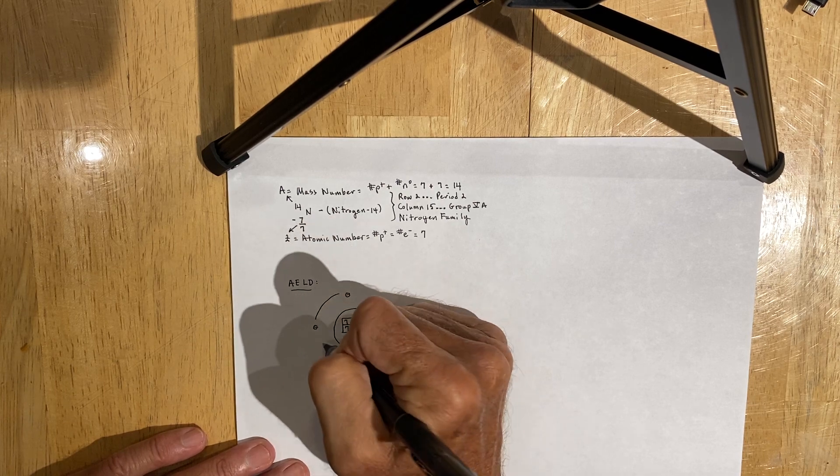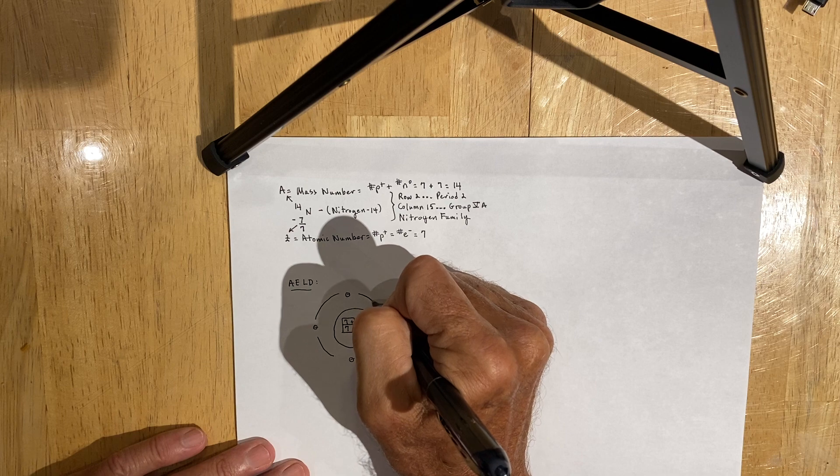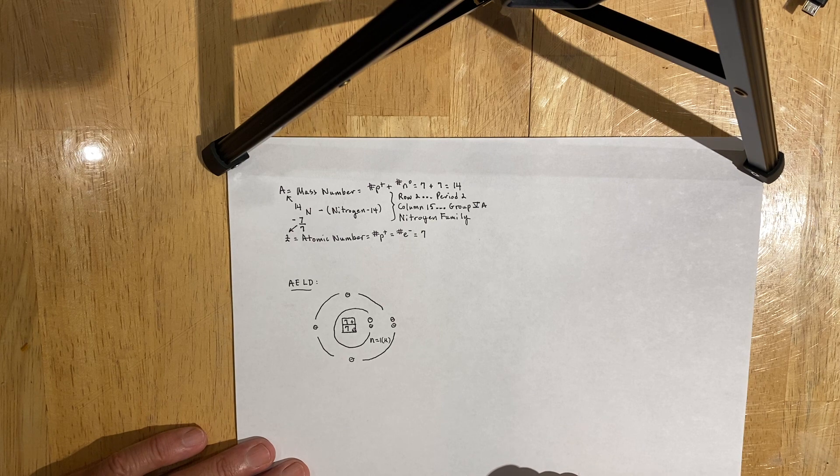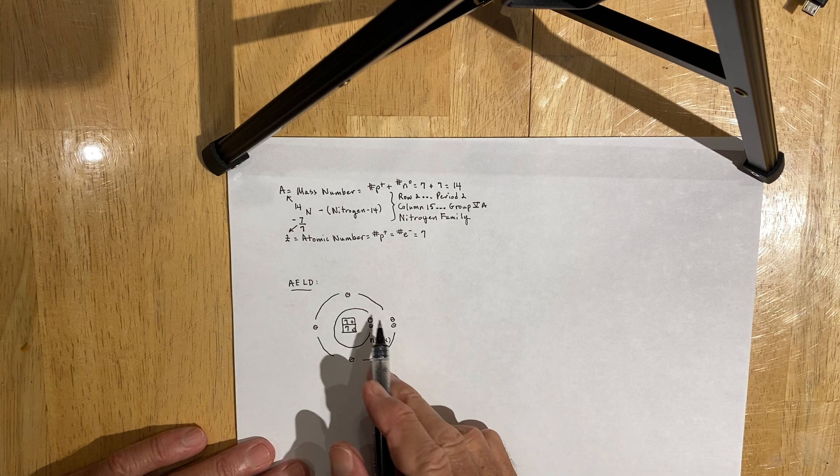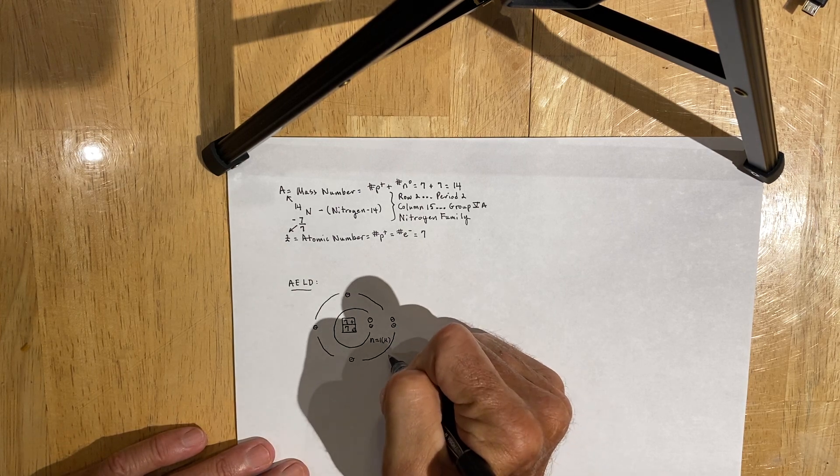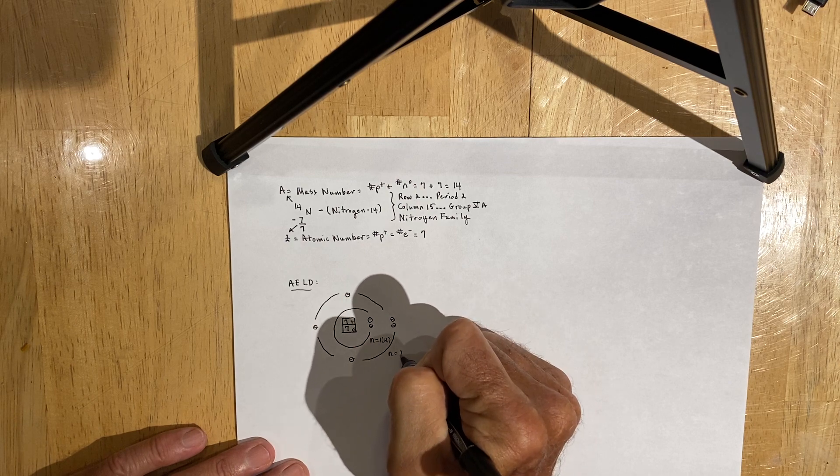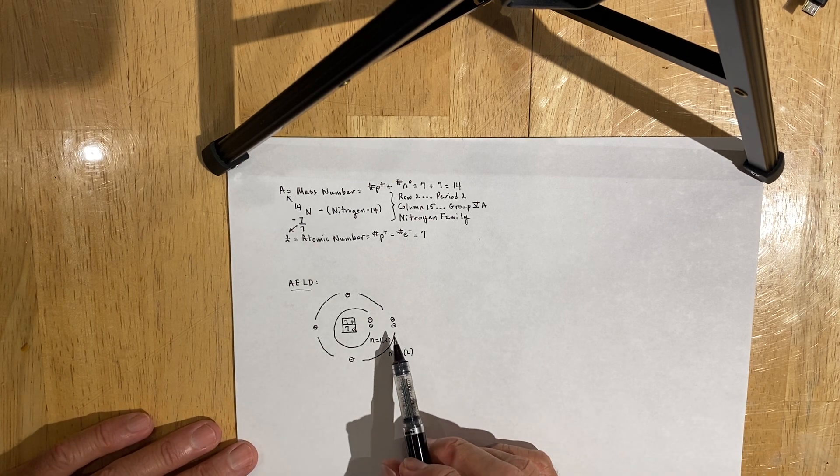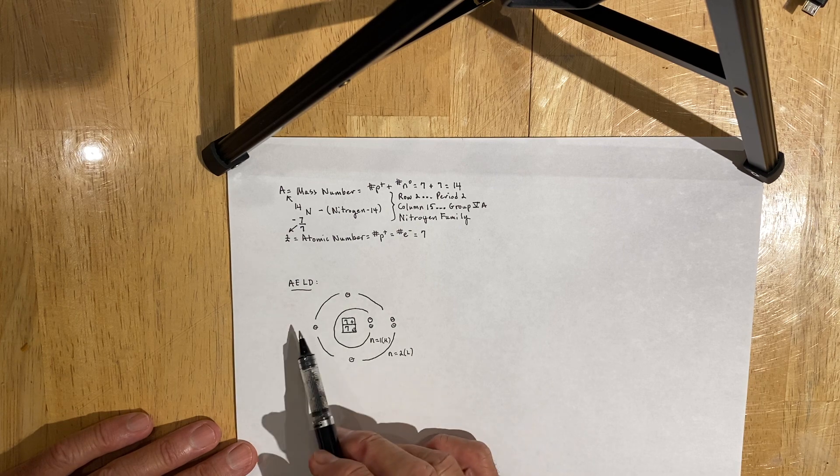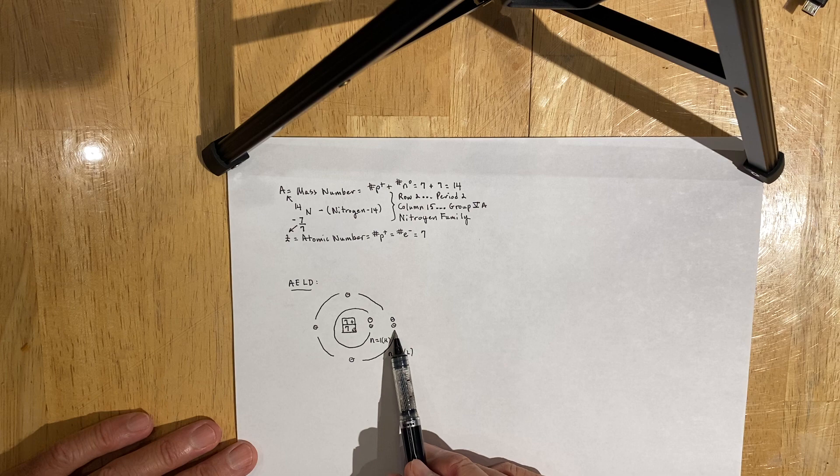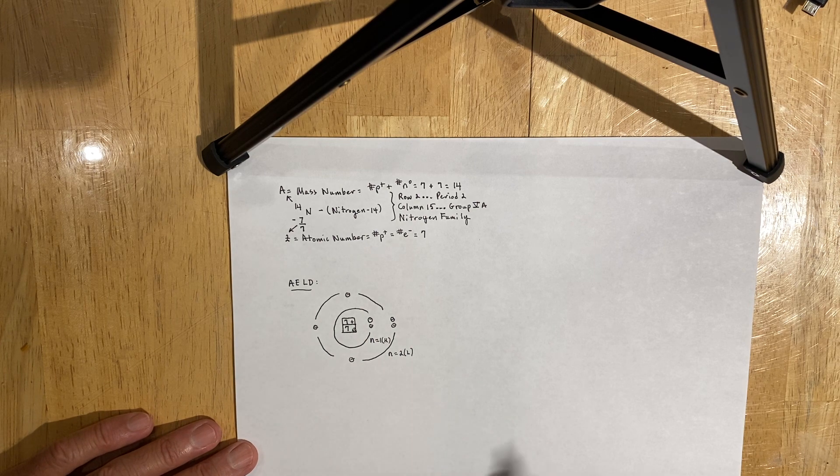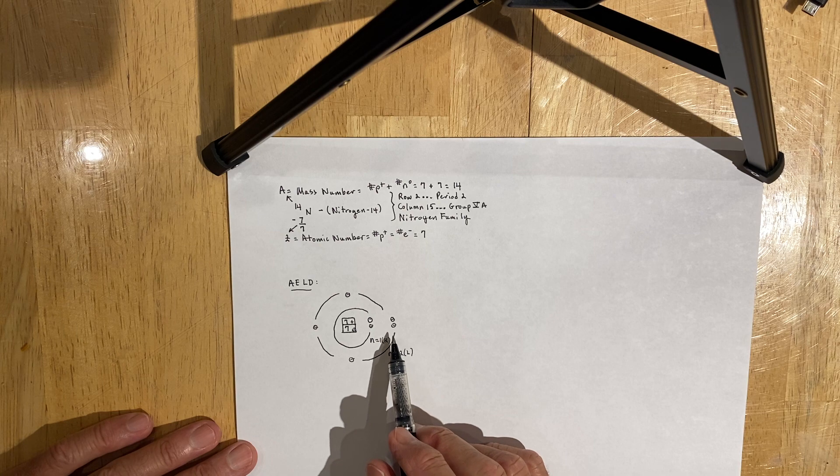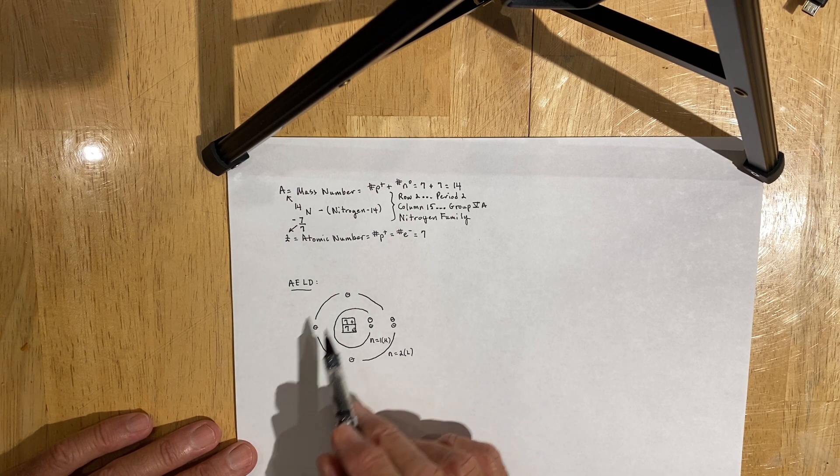By Hund's rule, Hund says that each orbital in a sub-level gets one electron before you pair them up. Sorry about that. That kind of went off a little bit at an angle, but I'm just going to let it be. So this would be the second energy level, or the L-shell. Why didn't they start at A? I have no idea. But you can clearly see that the second energy level has five valence electrons, two in the S, one in each of what we will later call the P-sub-level. And you can clearly see that it has two valence electrons that are paired, and three that are unpaired.